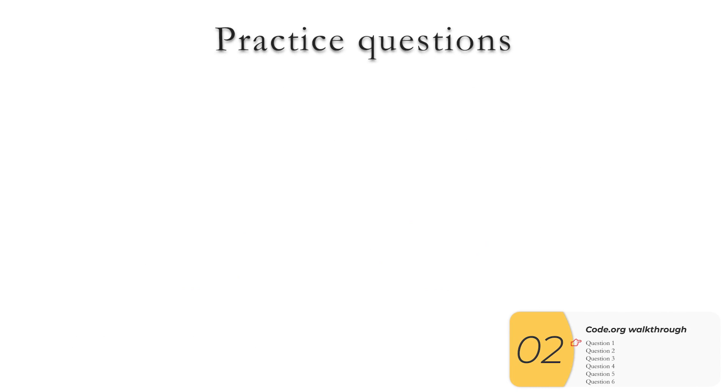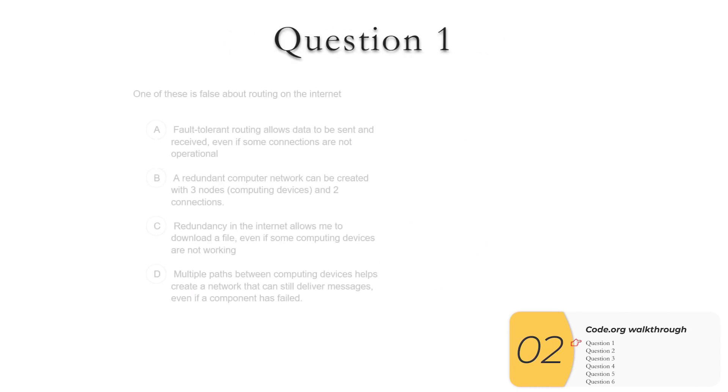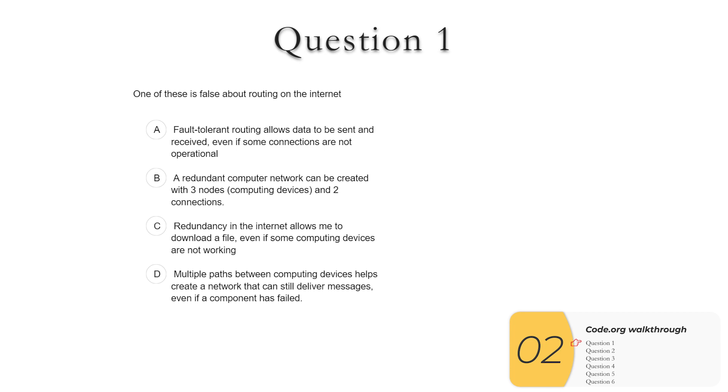Now on to some practice questions. Question one, one of these is false about routing under internet. So if you get a question that looks kind of like this, you're always on the lookout for fault tolerant, redundancy, being sure you know what those terms mean. That's what A and C are about. Both of these are true, so they are not the answer. D also has one of these keywords, multiple paths. Multiple paths are what make redundancy and fault tolerance possible. So this statement is true, and again, it is not the answer.